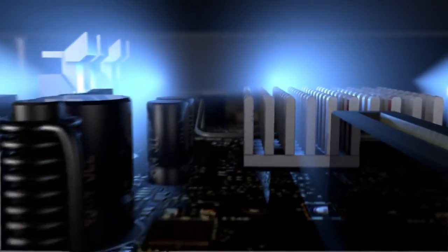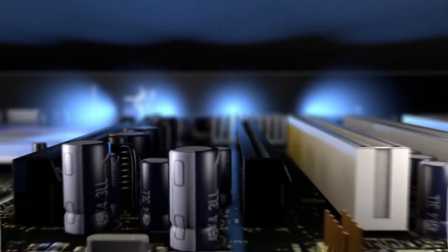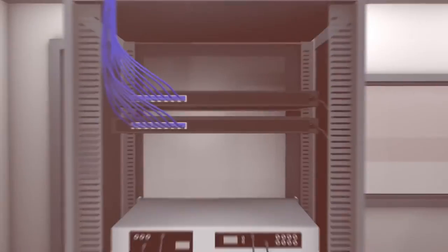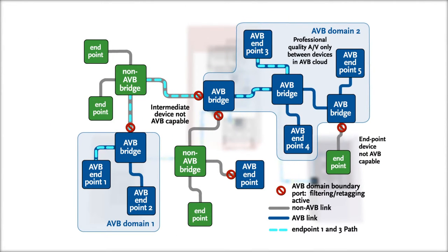AVB requires smart switches, which will route AVB streams and maintain QoS requirements automatically. While this may require you to invest in new switches for your network, the smart switches require less programming and administration by IT, which makes them simpler and more cost-effective to manage.